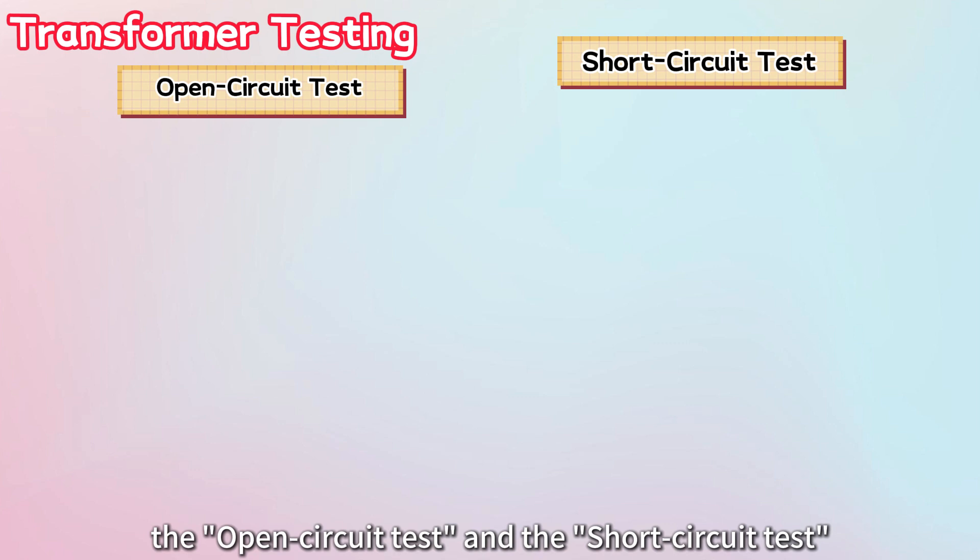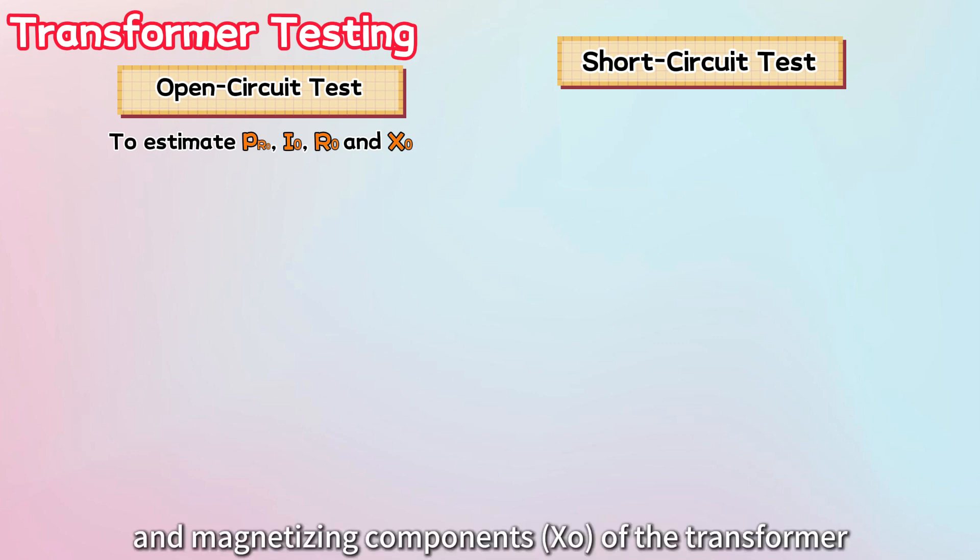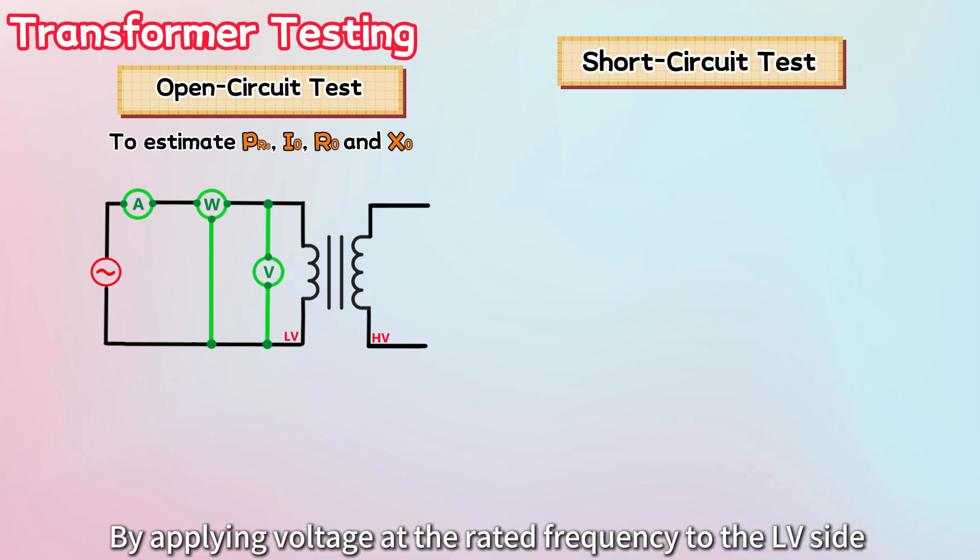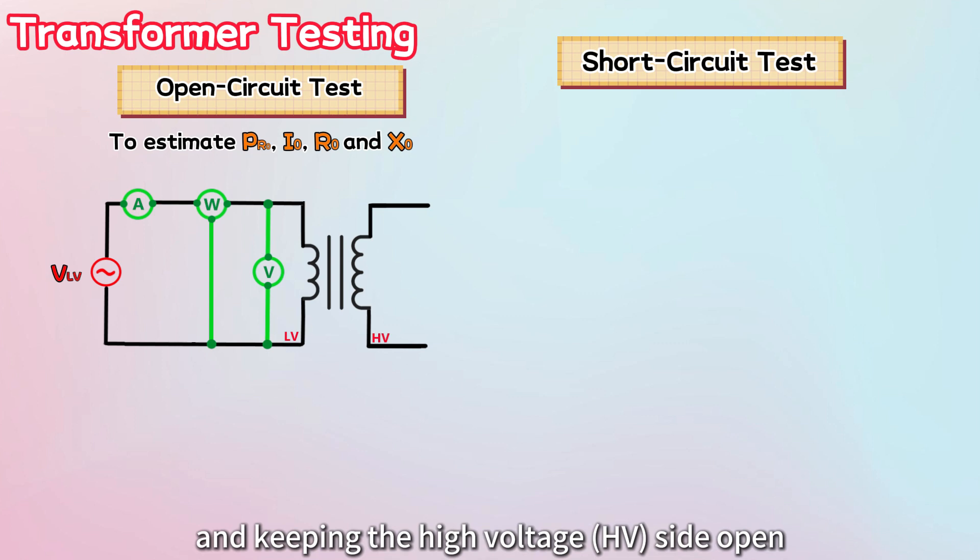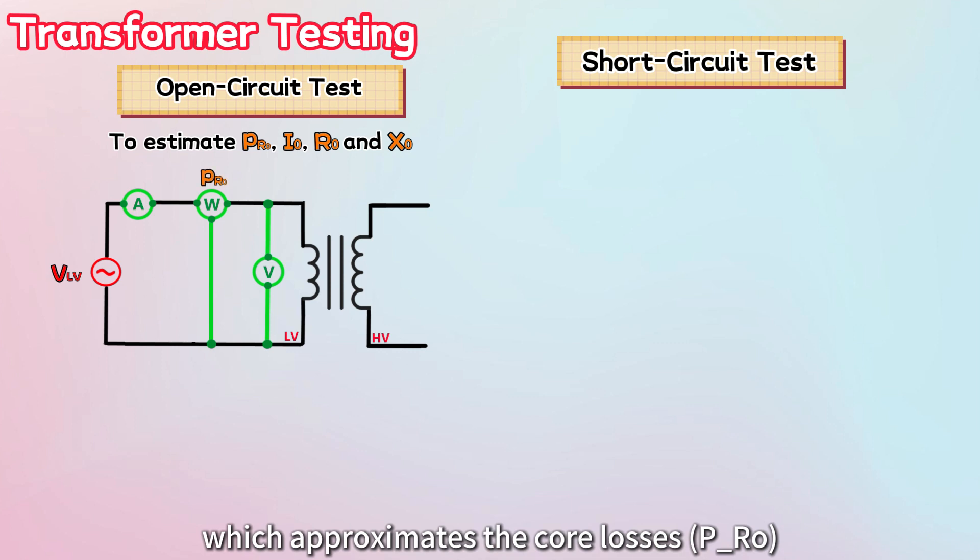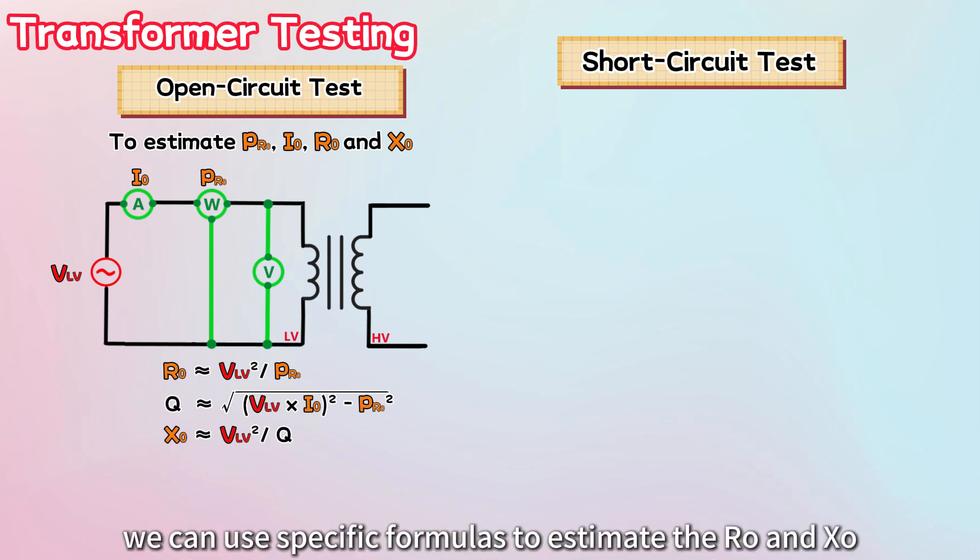Finally, let's discuss two essential tests that provide critical data for transformers: the open-circuit test and the short-circuit test. First, the open-circuit test determines the no-load losses, which are the core losses, no-load currents, core loss component R0, and magnetizing component X0 of the transformer. In this test, a voltmeter, wattmeter, and ammeter are connected to the low-voltage side of the transformer. By applying voltage at the rated frequency to the LV side and keeping the high-voltage side open, we can measure the input power with the wattmeter, which approximates the core losses. The no-load current is indicated by the ammeter. After that, we can use specific formulas to estimate R0 and X0.